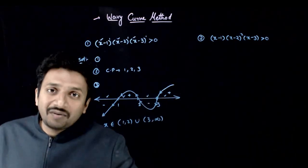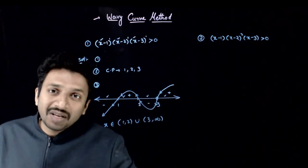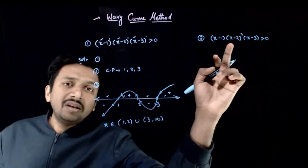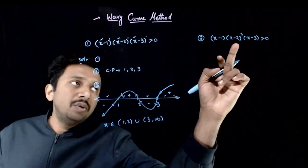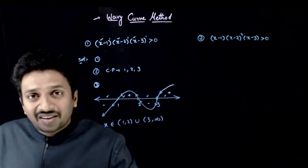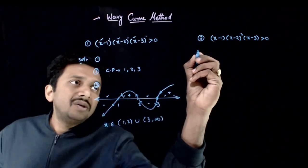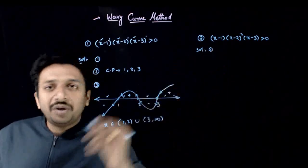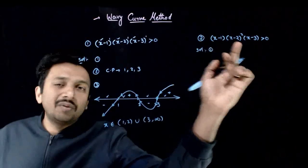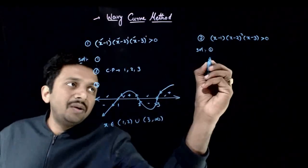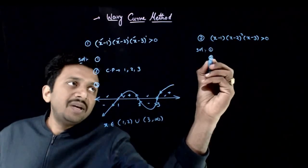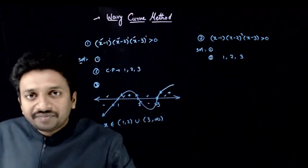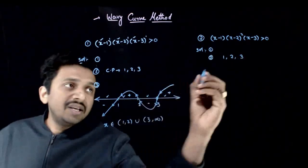Now let us go to the next question — a similar question, also factorized: x minus 1 into x minus 2 whole square into x minus 3 greater than 0. For this question also, the first step has been done — all leading coefficients are 1. Let us directly go to the second step: the critical points are 1, 2, and 3.